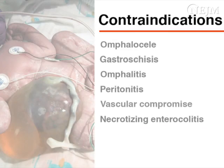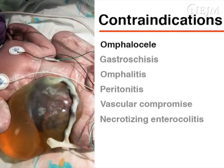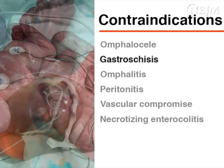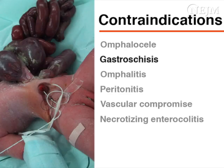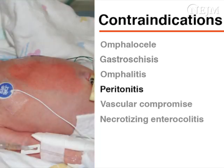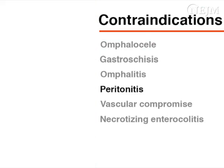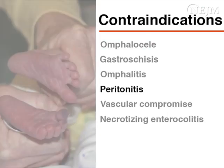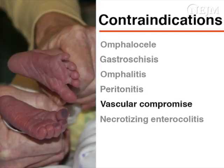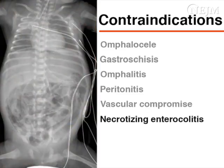The contraindications are similar for both vessels and include omphalocele, gastroschisis, omphalitis, and peritonitis. In umbilical artery catheterization, evidence of vascular compromise in the lower limbs or buttocks and necrotizing enterocolitis are considered additional relative contraindications.